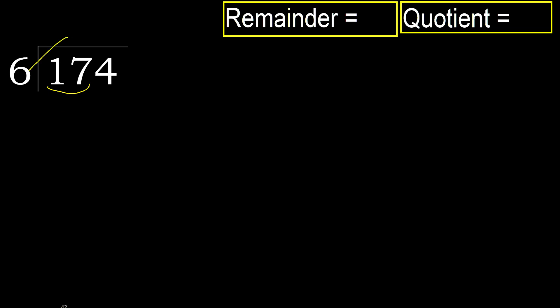6, multiply by which number is nearest to 17 but not greater. 6 multiplied by 3 is 18. 18 is greater. 6 multiplied by 2 is 12. 12 is not greater. Subtract. Next.